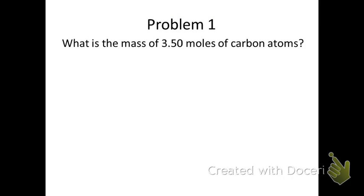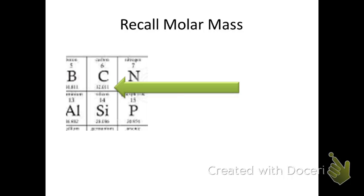Take a moment to read problem number 1 on your worksheet. You are being asked to convert 3.50 moles to grams of carbon, so you will need to know how many grams of carbon are in 1 mole of carbon. Using your periodic table, determine the molar mass for carbon. You should determine this to be 12 grams, so 1 mole of carbon would have a mass of 12 grams.